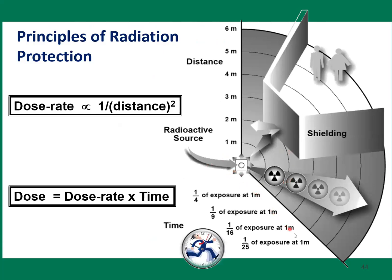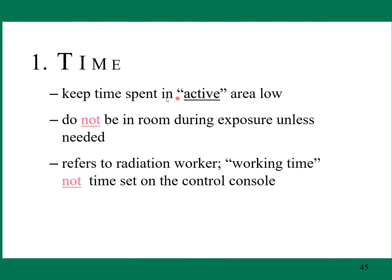How distance affects radiation follows the inverse square law. Time: keep time spent in active radiation areas low. Do not be in the room during exposure unless needed. This applies to radiation workers' working time, not time at the control console.